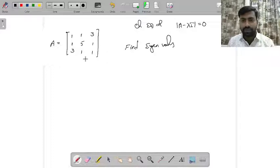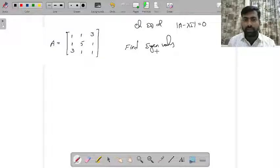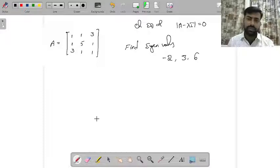But here it is not. So we need to solve for the eigenvalues. We need to solve this equation. If we solve, the eigenvalues are going to be negative 2, 3, and 6. These are the eigenvalues of this matrix.